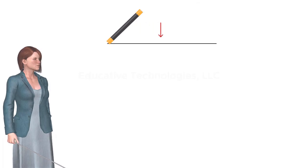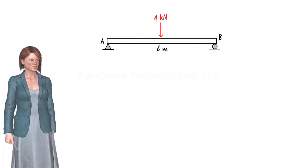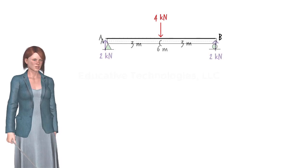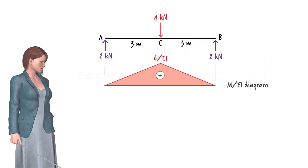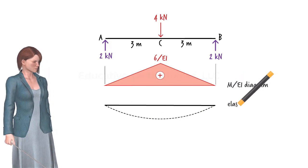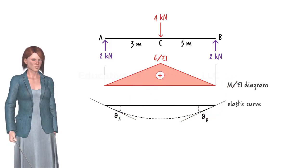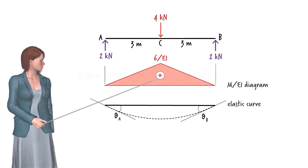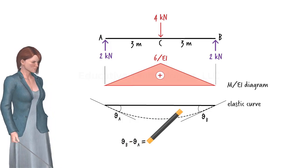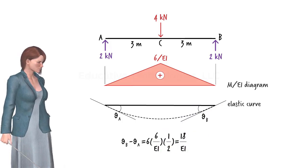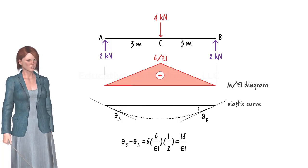Now consider a simply supported beam subjected to a concentrated load at its midpoint. Suppose we wish to determine the slopes of the elastic curve at the ends of the beam. Let's draw the beam's M over EI diagram and its elastic curve. Labeling the end rotations as theta A and theta B, and knowing that the area under the M over EI diagram is 18 over EI, according to the first moment area theorem we can write an equation. However, neither theta A nor theta B can be calculated since we have one equation with two unknowns.